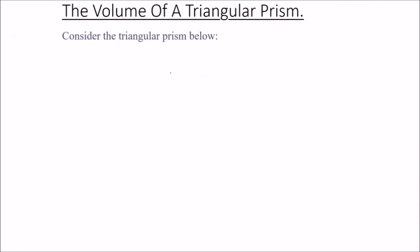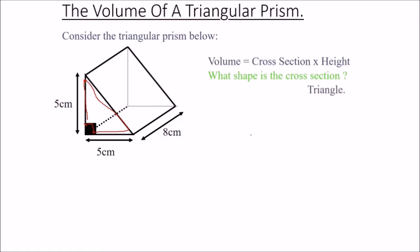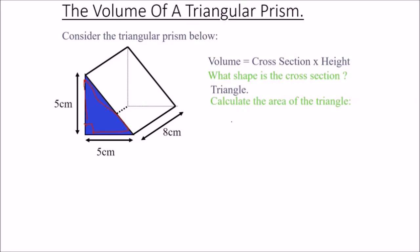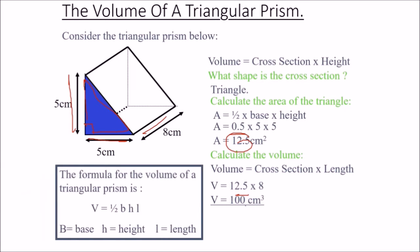For a triangular prism with a right-angle cross section, volume equals cross-section into length. The area of the right-angle triangle is ½ × base × height = 0.5 into 5 into 5 = 12.5 centimeter square. Volume is 12.5 into length 8, so V = 100 centimeter cube.